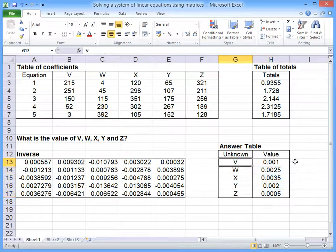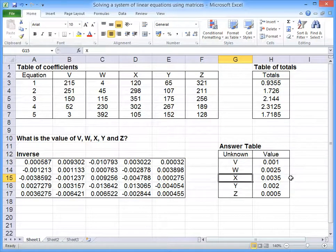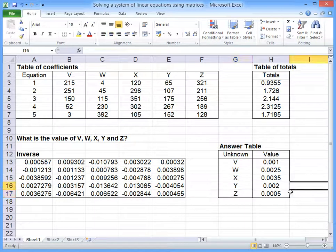V equals 0.001, W equals 0.0025, X equals 0.0035, Y equals 0.002, and Z equals 0.0005. And so that there gives us the answers.